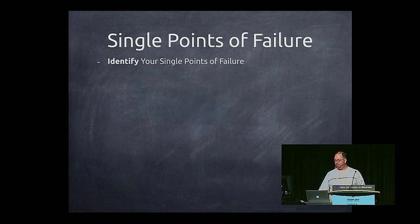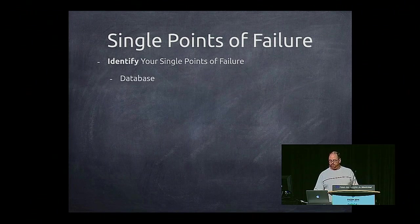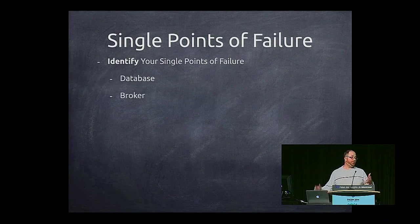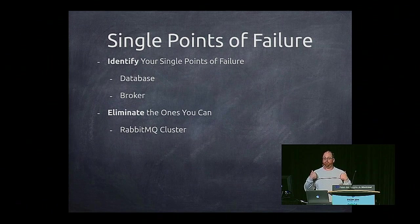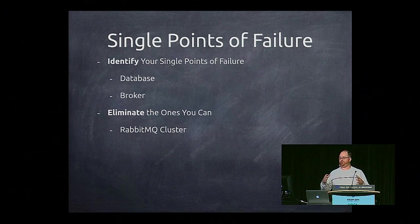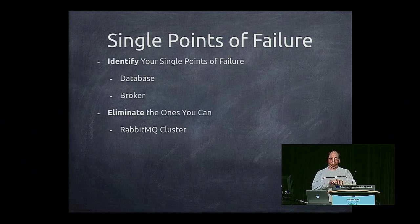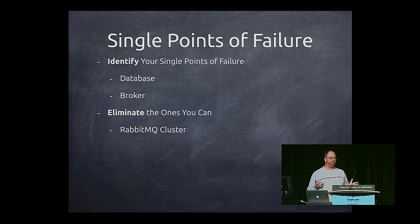Single points of failure. First, identify your single points of failure — everyone's got them somewhere in their system. It could be your database — just a centralized database. It could be your broker — just one computer doing your RabbitMQ. Eliminate the ones that you can. For RabbitMQ, go ahead and put it in a cluster. For us, we have a cluster of five servers doing just RabbitMQ, and five servers just doing Zookeeper. So if one server goes down, you can just move on to the next one.